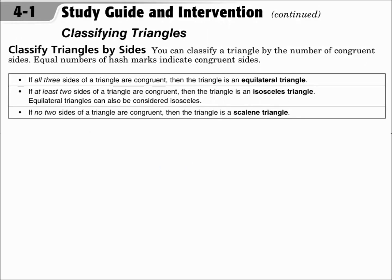You can also classify triangles by side lengths. If all three sides are congruent, then it's an equilateral triangle. If at least two sides are congruent, then it's isosceles. So equilateral triangles are also isosceles, since they do have at least two sides congruent. And if all sides are different, then it's scalene.